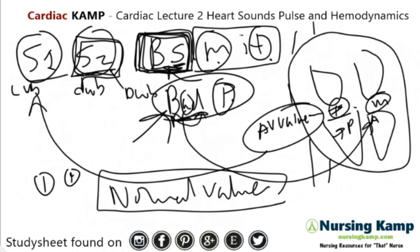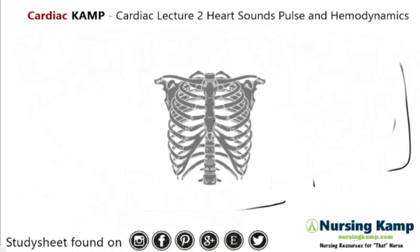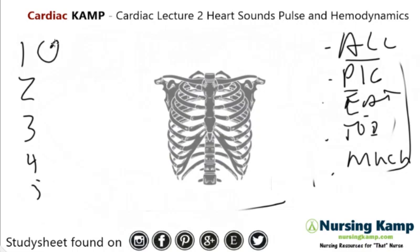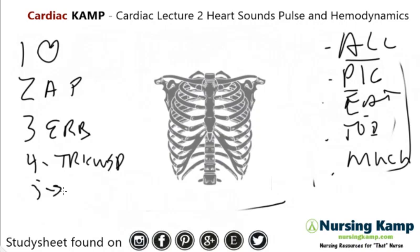Let's look at the heart structure and where to listen. When looking at the chest, the mnemonic is 'All Pigs Eat Too Much,' which you might also know as 'Ape to Man.' We number the positions one through five: one is the heart itself; two is aortic; three is pulmonic; Erb's point is the third intercostal space — three letters in Erb, third intercostal space; four is tricuspid; and five is mitral.